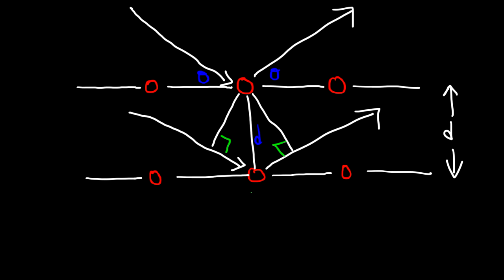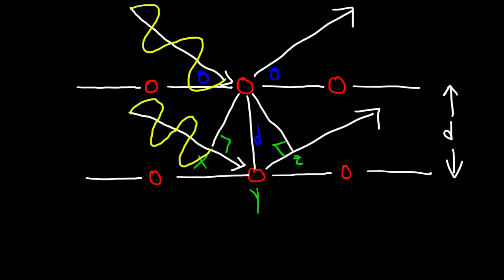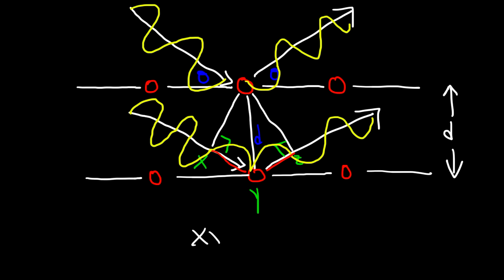Let's call this position y, position z, and position x. This is going to be the wave of the x-ray. We're going to say these two waves are in phase. The wave on the bottom travels a greater distance than the wave on top. The extra distance that it travels is equal to this portion of the right triangle plus this portion — the portion on the left, that's x-y, and the second portion, that's y-z. So that's the extra distance the wave on the bottom travels compared to the wave on the top.